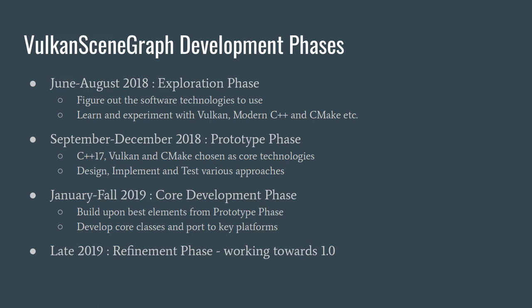The VulkanSceneGraph project has been broken down into four phases. The first was an exploration phase from June to August last year — figuring out what software technologies to use, learning and testing Vulkan, modern C++, and CMake. In the latter half of last year we went into the prototype phase, having decided on Vulkan, C++17, and modern CMake, exploring different design and implementation approaches to how we wrap Vulkan and test both features and performance.